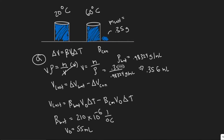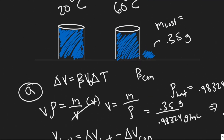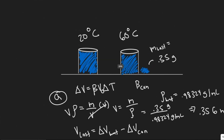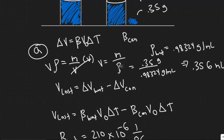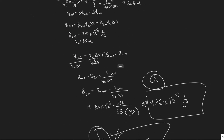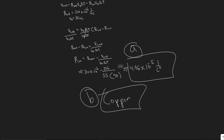Quick rundown of how we did this: we knew the volume lost equals the change in volume of the water minus the volume of the container, because the water expands more than the container. If they're both the same initial volume, there's going to be a greater volume of water that leaves the cup. Then it was just a matter of using this formula, solving for the values, and plugging it in. Hopefully you found this video useful.